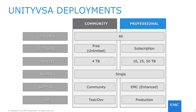EMC recommends this version for test and dev use cases only. For fully EMC-supported editions of Unity VSA, there are capacity point options of 10TB, 25TB, and 50TB, which require a purchased subscription license. With these subscription editions, EMC support personnel will handle support cases to ensure issues are resolved in a timely manner. Users can use these professional editions for production use cases as needed.